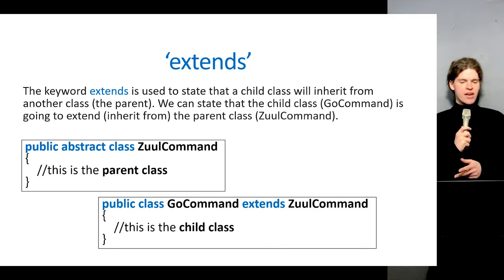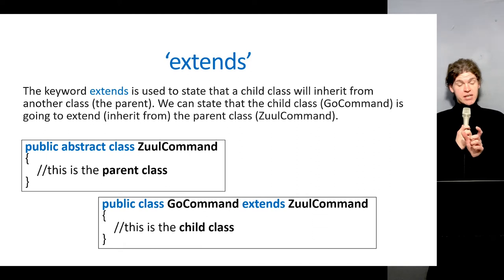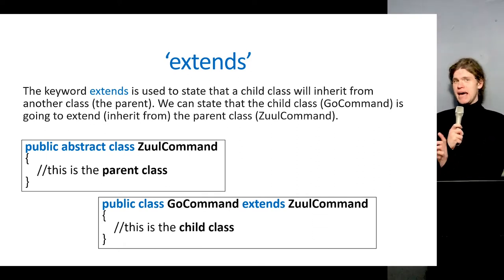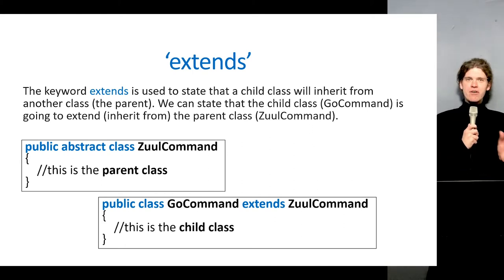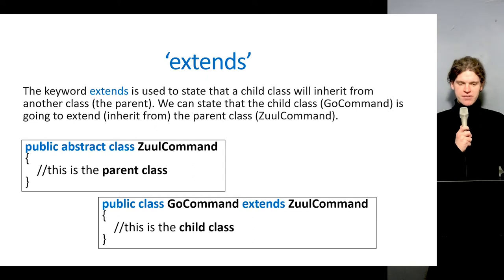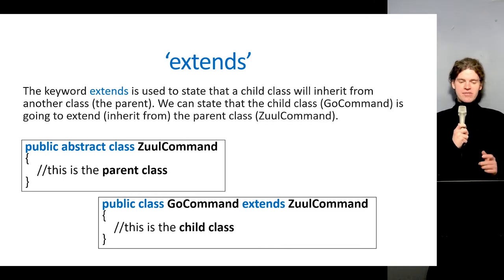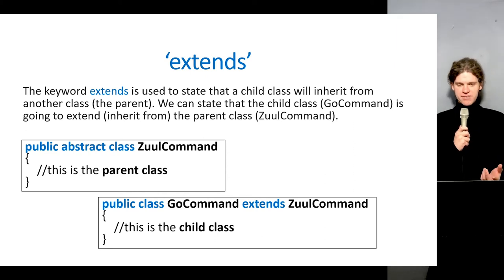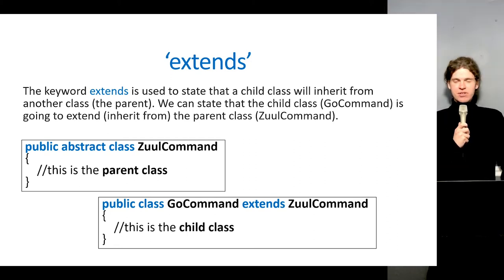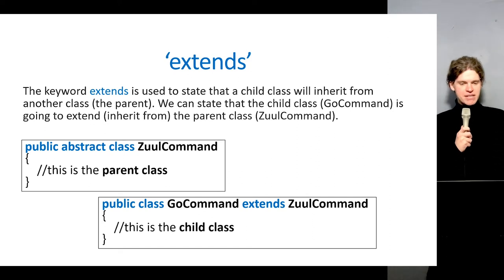In those class definitions — here's one example for GoCommand — we write the keyword extends after the child class name, followed by the parent class name, to indicate we are going to inherit from that parent class, which is ZoolCommand. That's Java — in C# and C++ it's a colon instead. But in Java it's extends. Now let's move on and talk about super.